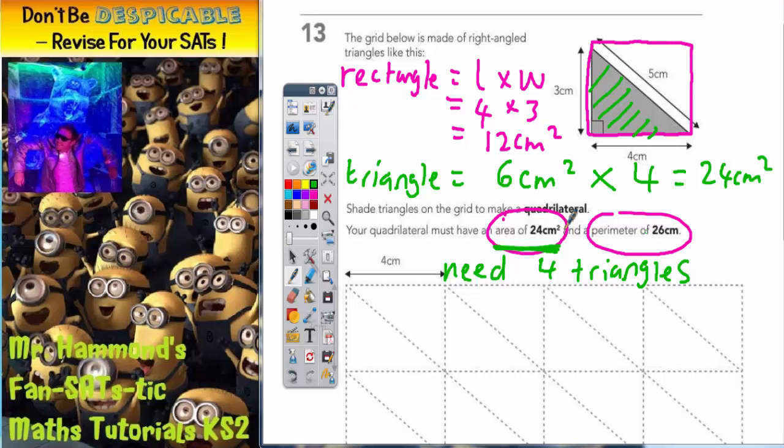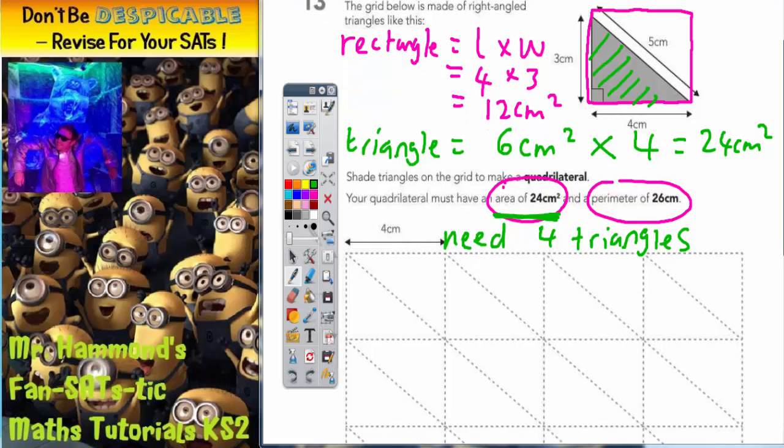That's the first thing that we need to establish. Now, the question is, where do we shade them? Well, we've got to keep one eye on this perimeter.